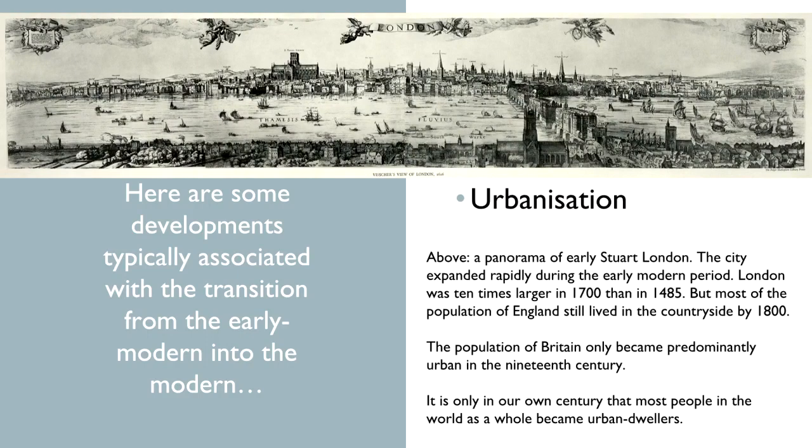The next transition is urbanisation. The early modern period certainly saw the rise of towns — for example, the population of London grew much faster than the rest of the country, ten times larger in 1700 than it had been in 1485. Its population stood at roughly half a million at the start of the 18th century, and a million by the end. But the transition to majority urban-dwelling societies still belongs to a later period. During the 18th century, even in fast-urbanising parts of Western Europe and the Americas, most people still lived and worked in the countryside. In 1800, fewer than a fifth of English people lived in towns or cities.